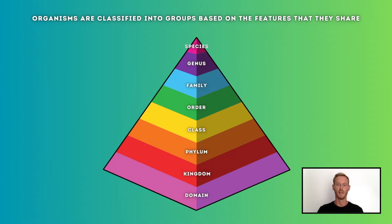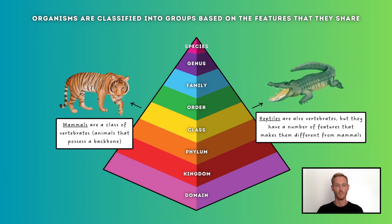There are millions of different organisms on Earth, and biologists sort them into groups, or classify them, based on the features that they share. For example, mammals are warm-blooded, have four limbs, produce milk, and give birth to their young, so organisms that possess these features will be classified as such.